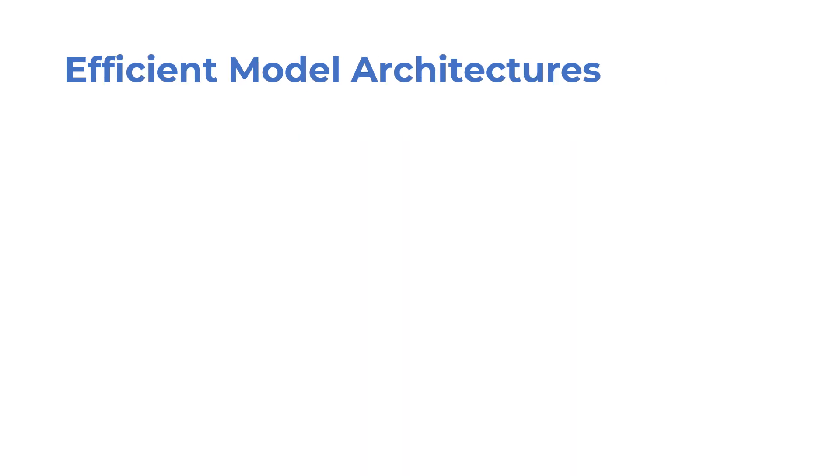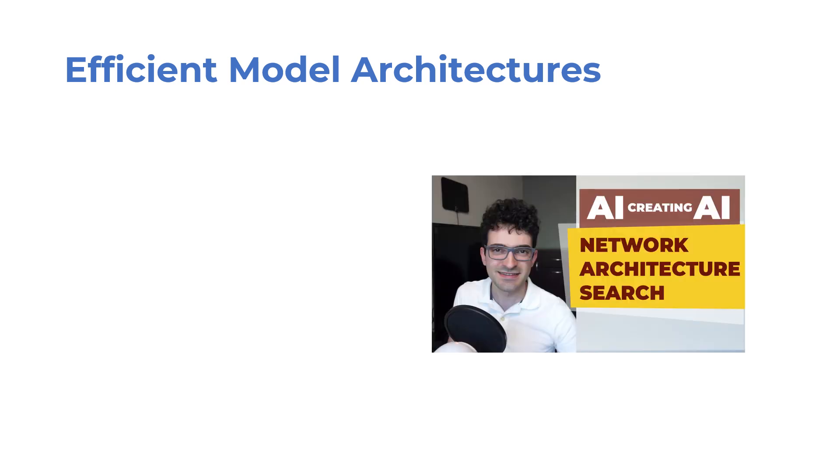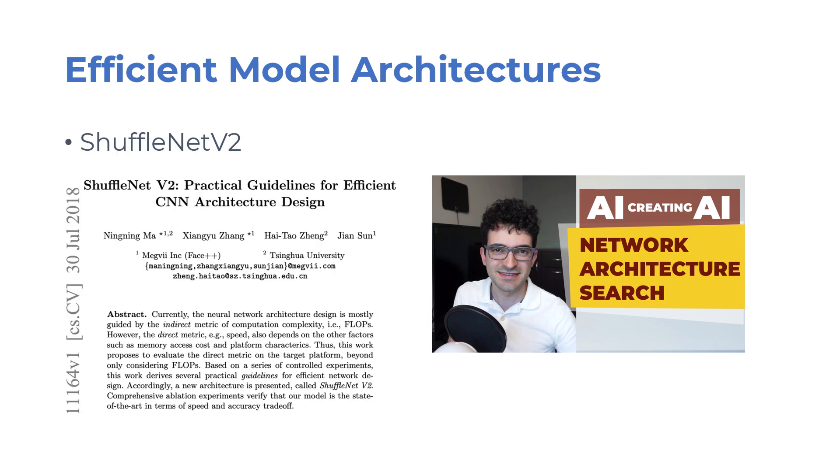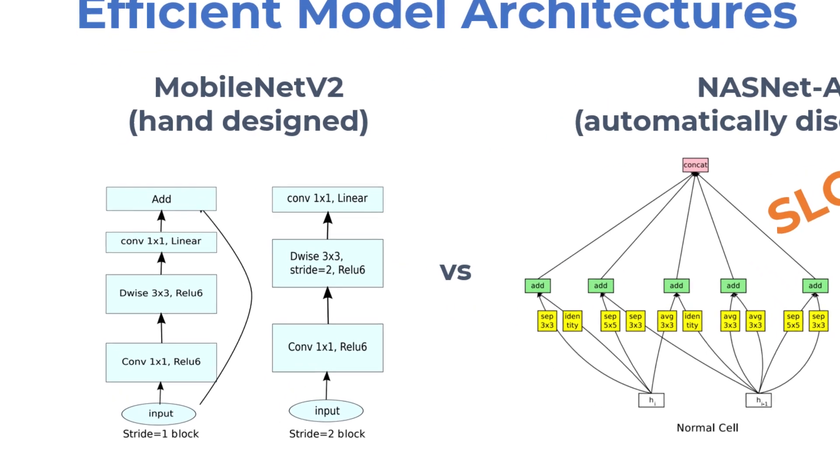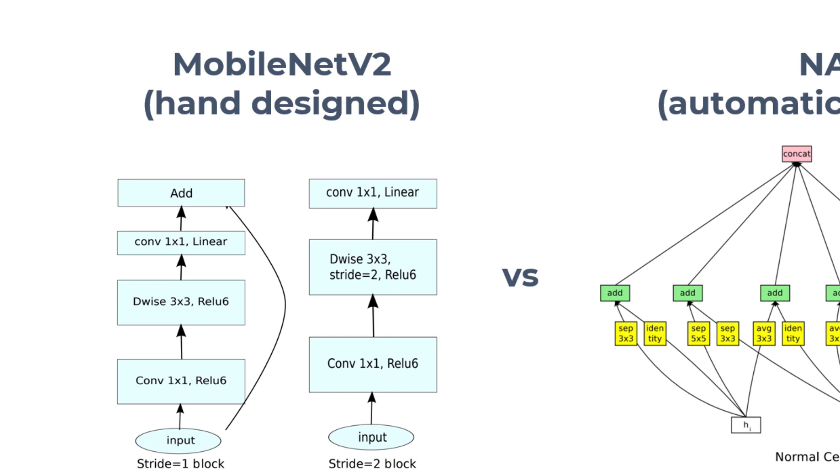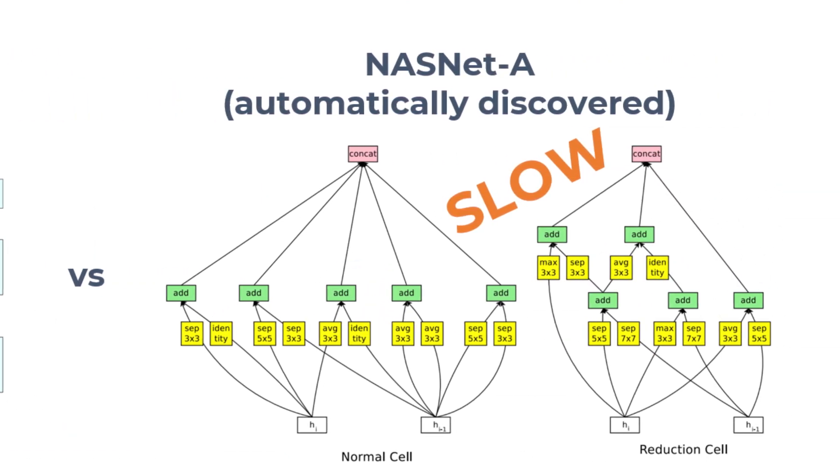Let's first talk about efficient model architectures. Despite the recent advances in automated network architecture search, hand-designed models are still relevant, especially when it comes to designing efficient models. For example, the ShuffleNet V2 paper argues that automatically found network architectures are much slower in practice even when they require a smaller number of operations to run. Their paper reports that MobileNet V2, a hand-designed model, is much faster than NASNet-A, which was a result of an automated network architecture search process.